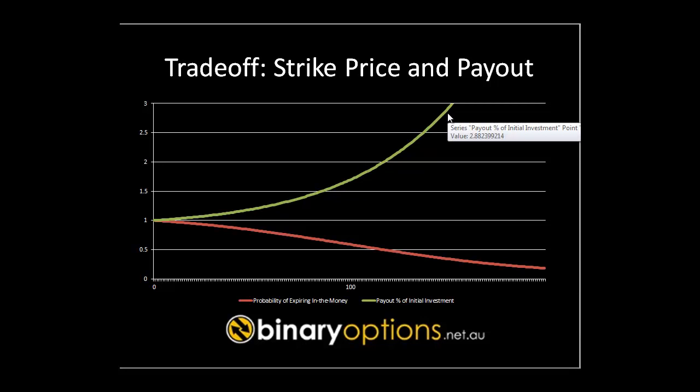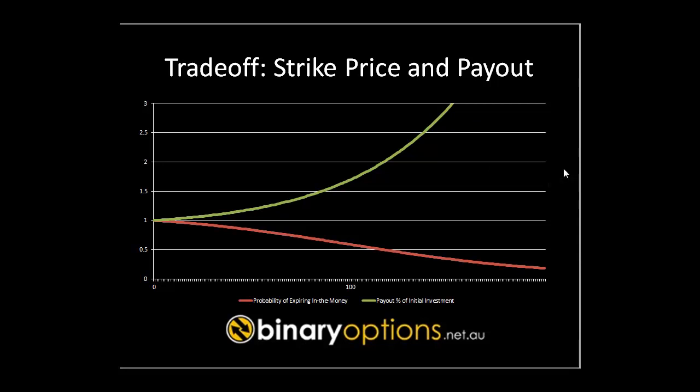In theory, a binary call option with a strike price equal to infinity has a 0% chance of paying out. Even if this option had an infinite payout percentage, we would still never want to invest in it. Now that we understand the theory, when we move back to the real world, we're typically looking at options where there's a reasonable probability of paying out, but there's some uncertainty.